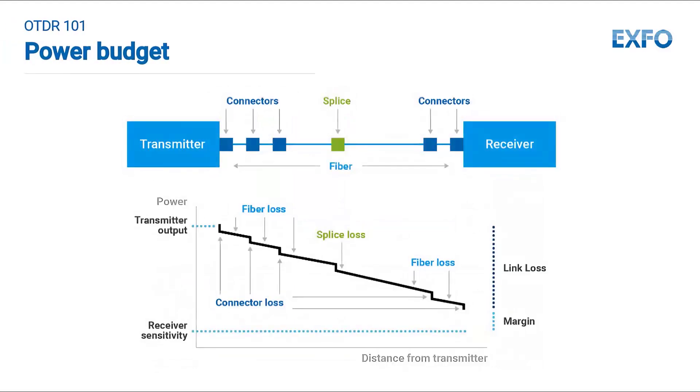Total link loss: from point A to point B, the total loss budget needs to be respected to make sure the transmitter and receiver used will deliver the quality expected.